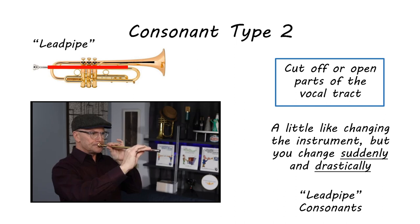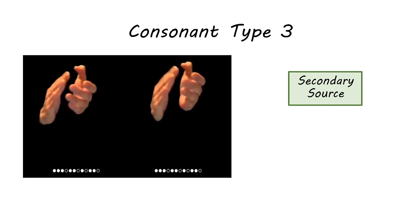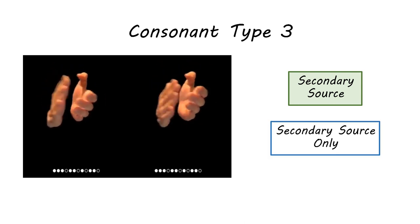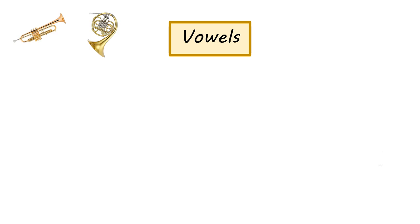Finally, the third type of consonant is one where you create a secondary source of sound. This is like if you were playing your trumpet and suddenly started clapping. You could either stop playing the trumpet to clap — in which case all you have is a secondary source — or you could clap while you played, giving you both the vocal folds and the secondary source of sound. So this third type creates a secondary source of sound using a different part of your vocal tract besides your vocal folds.